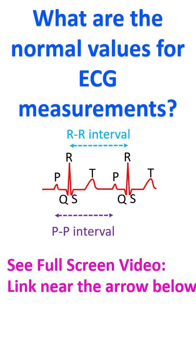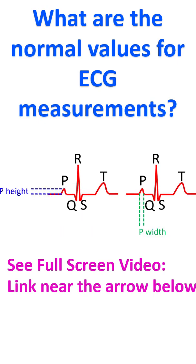It is actually the rate of the lower chambers or the ventricles. If the rate of the P waves is different from that of the R waves, it has to be measured separately from the PP interval. The rate of P waves will give the rate of the upper chambers. Both the width and height of the P wave are measured to assess enlargement of the upper chambers or the atria.